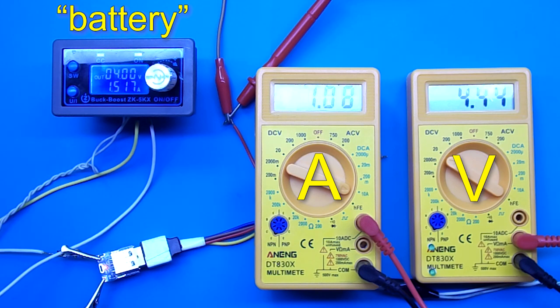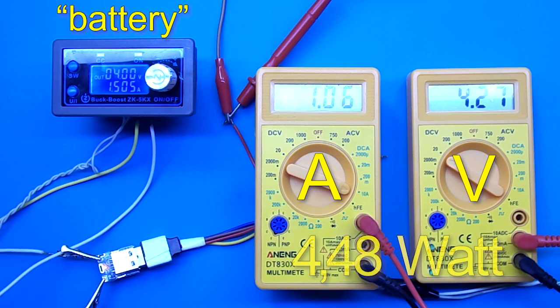If you increase the load further, then with a charging current of 1 ampere, the voltage sags down to 4.3 volts. Although the voltage is low, the phone will still be charged.